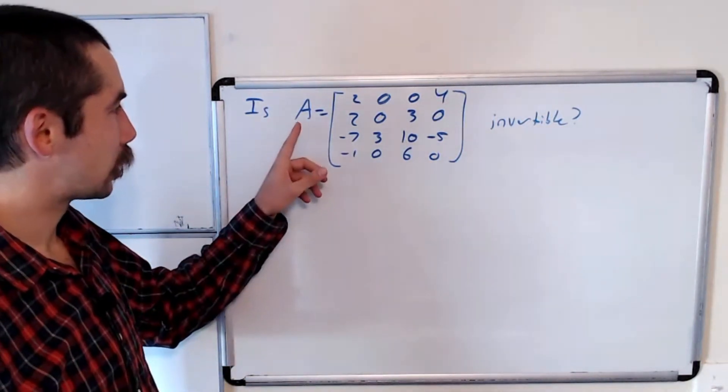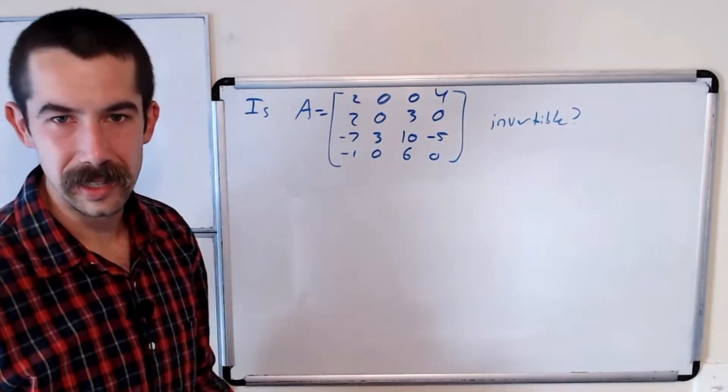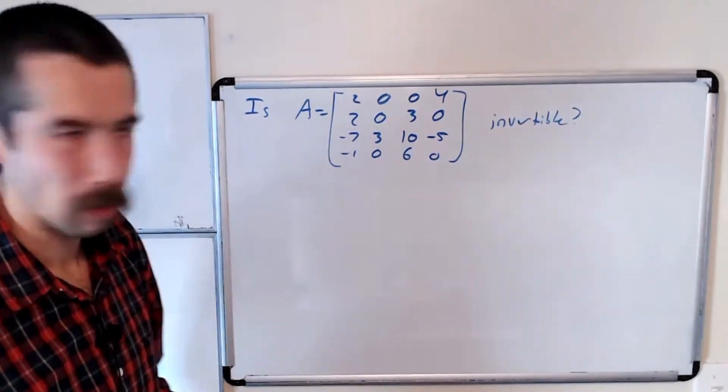And we're going to answer it by using determinants. Recall that a matrix is invertible if and only if its determinant is not equal to zero. So we're going to compute the determinant of this matrix and see if it's zero or not.